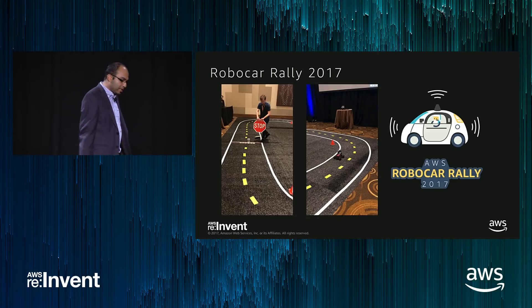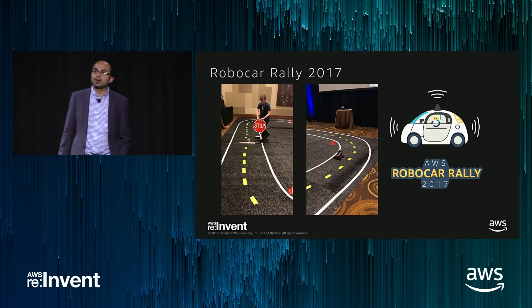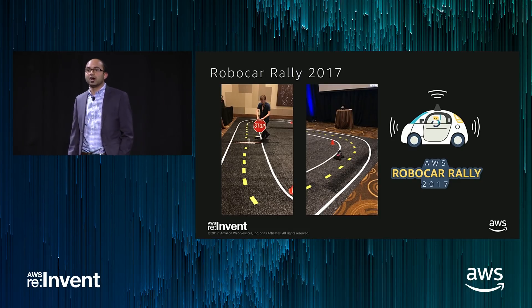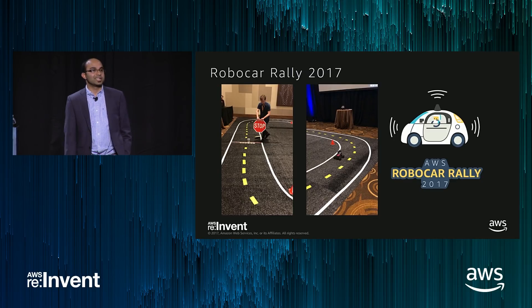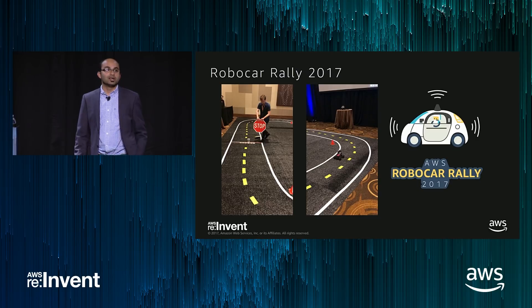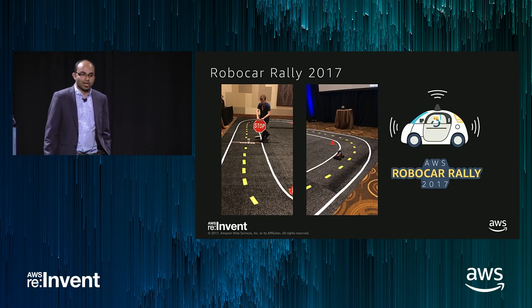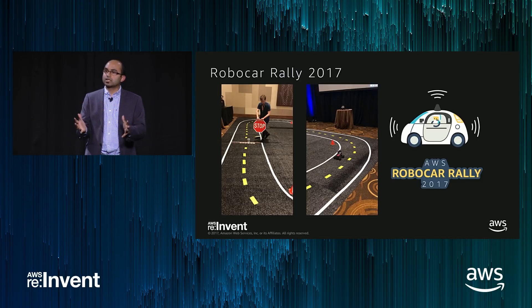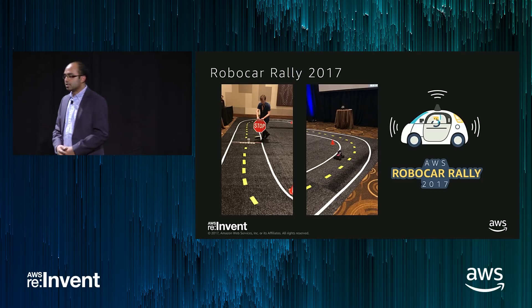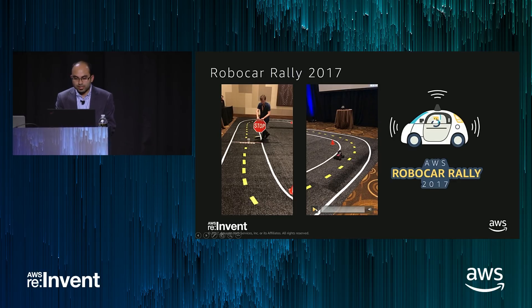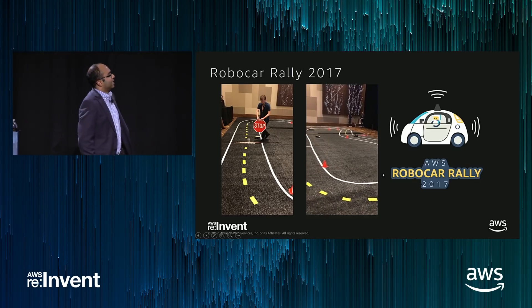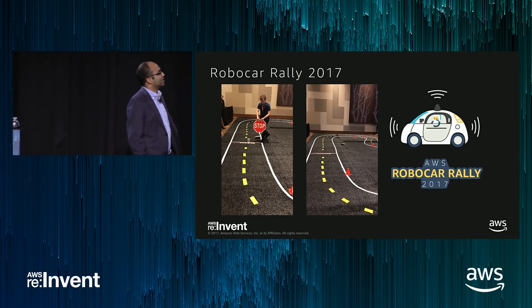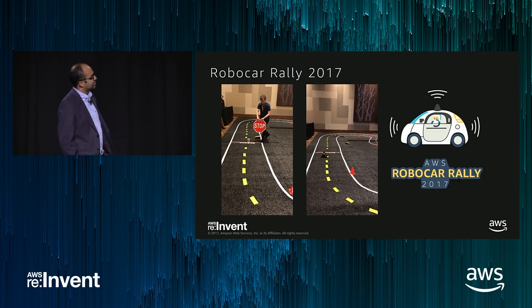We did an autonomous car hackathon on Sunday and Monday — just a couple of days ago. Participants with no machine learning experience or car-building experience were able to build a car in 14 hours and race it. They used a method called behavioral cloning: you drive the car around, collect data, and learn how the driver drove — then replicate or imitate that. The car was able to do a successful lap and stay within the lines.